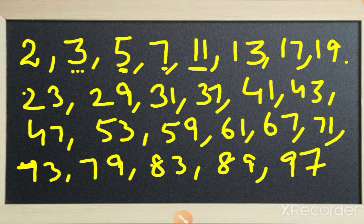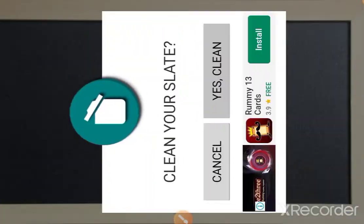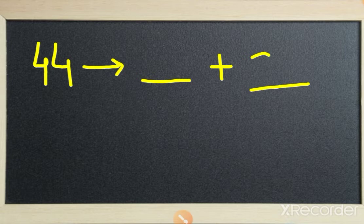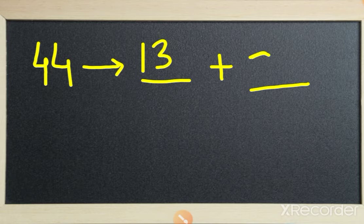Next question: sometimes they ask to express the following as a sum of two odd prime numbers. Suppose you are given the number 44. You have to write two numbers — two odd prime numbers whose sum equals 44. Looking at our prime number table, choose any two odd prime numbers that add up to 44. I choose 13 and 31.